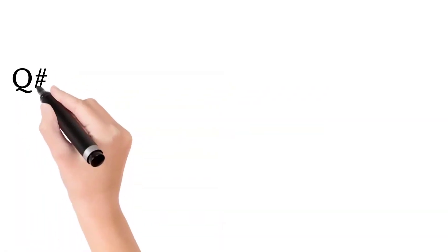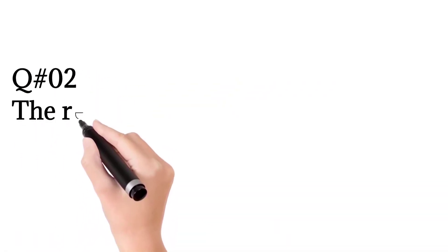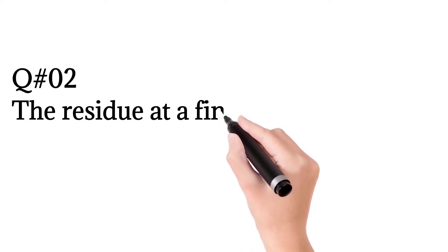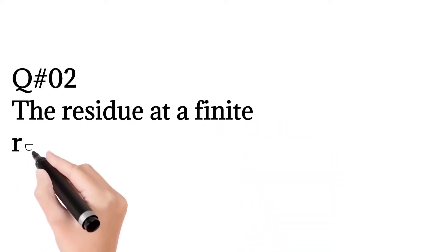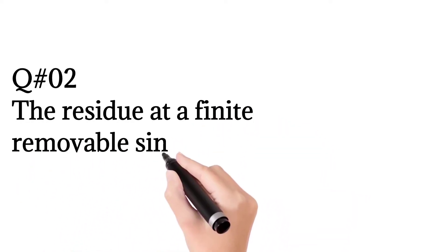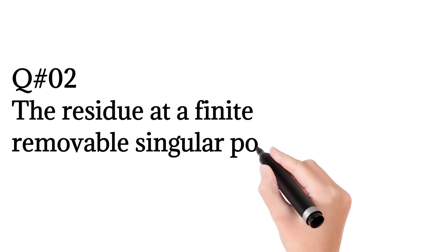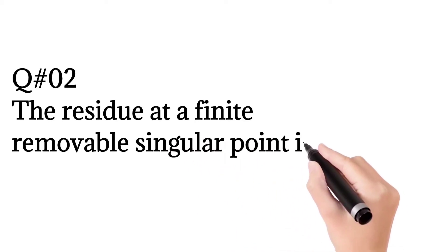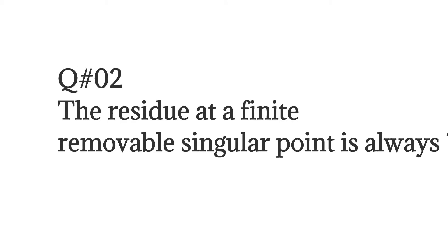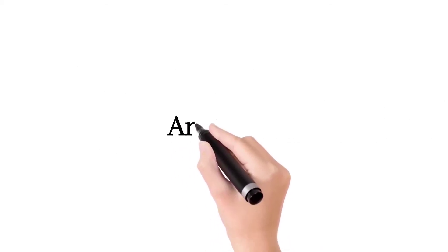Question number 2: The residue at a finite removable singular point is always — the answer is 0.